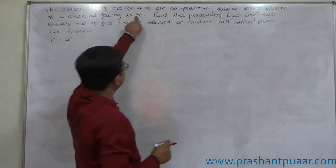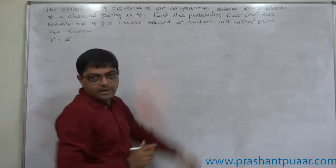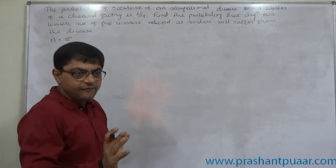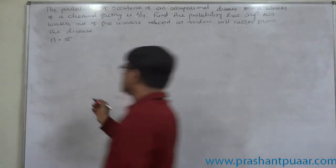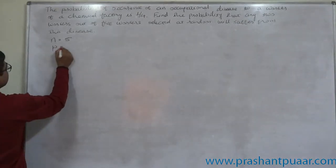General probability of suffering from the disease is 1 by 4. So if any worker is selected at random, probability remains 1 by 4. So it can be treated as P.